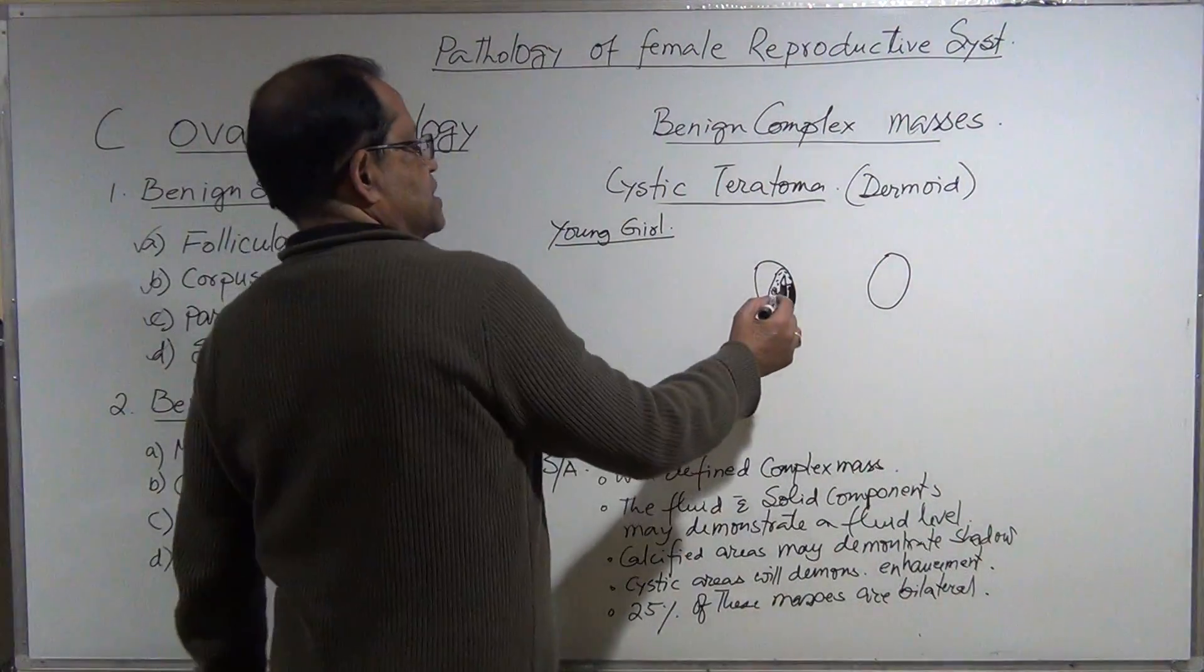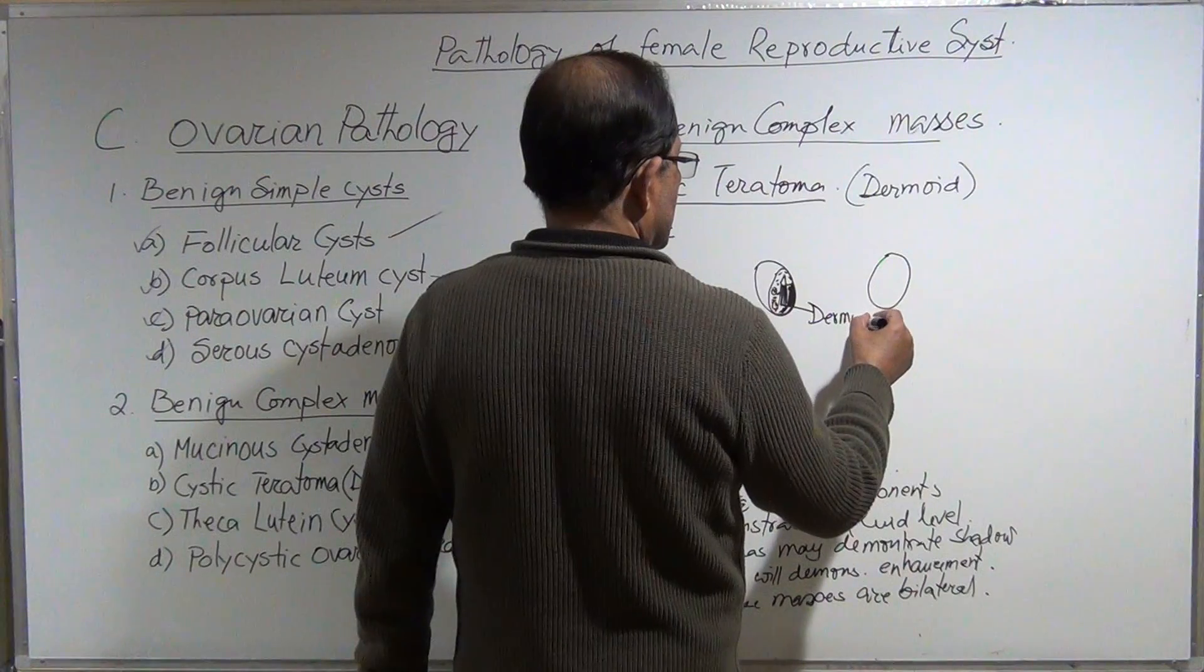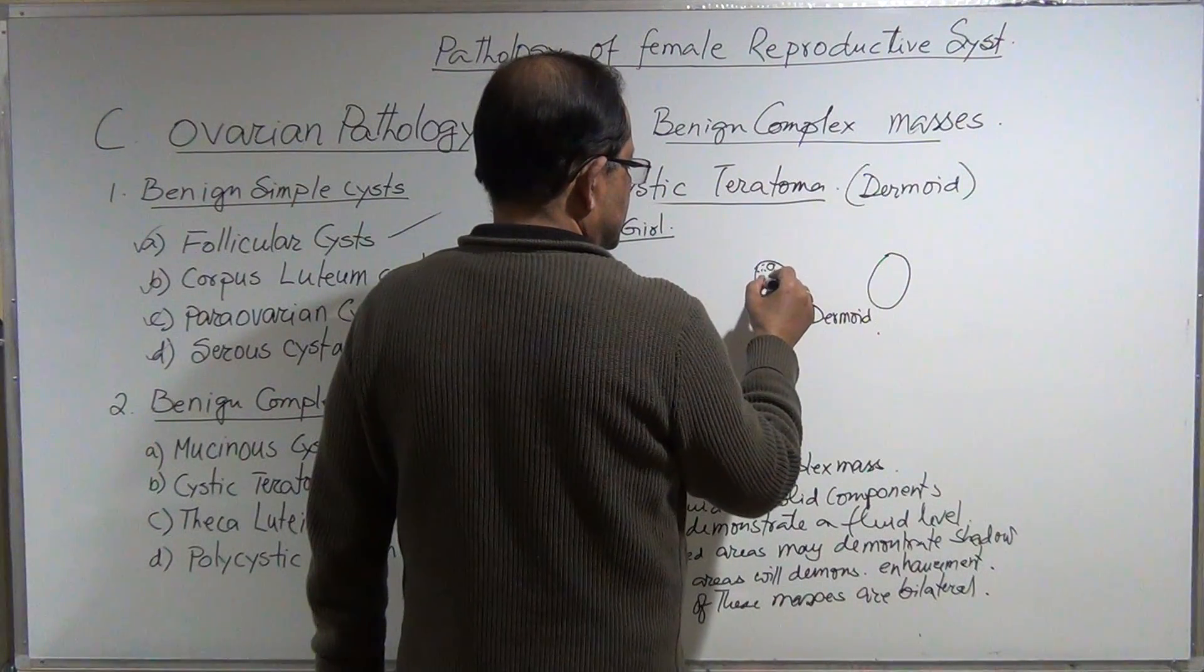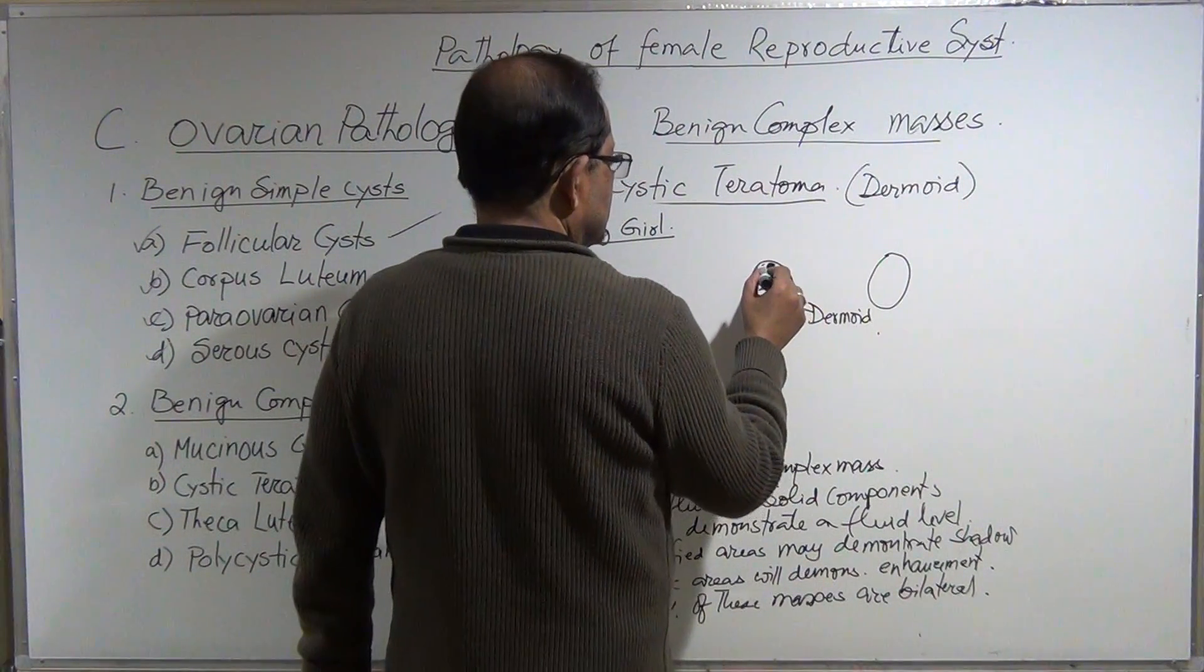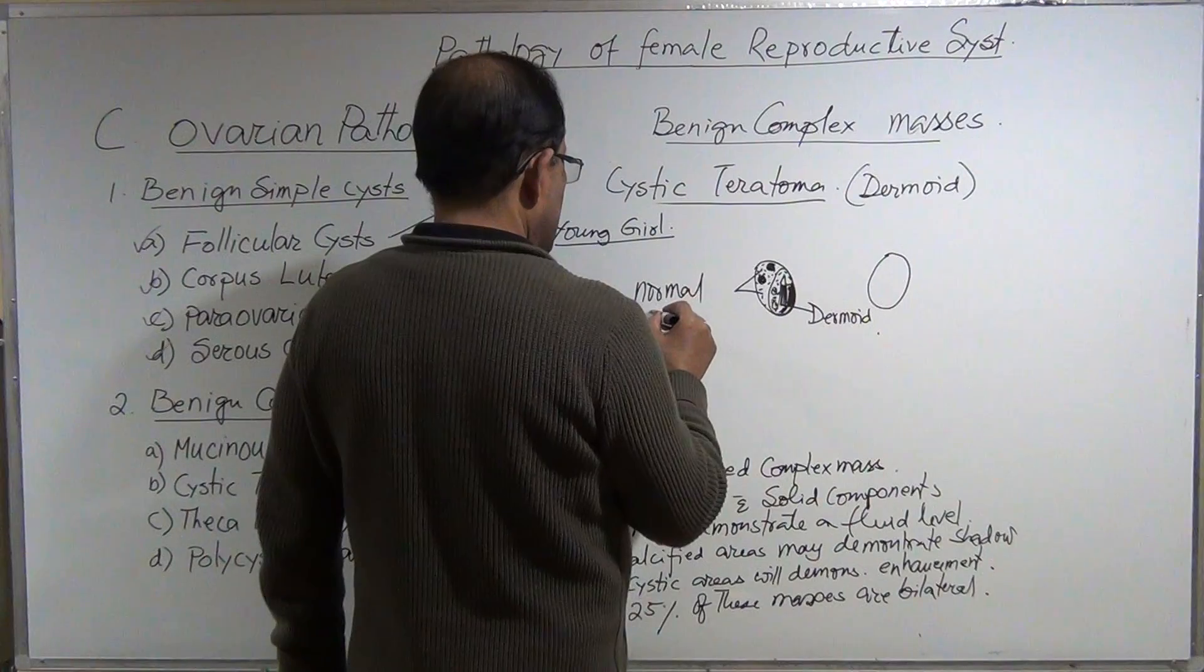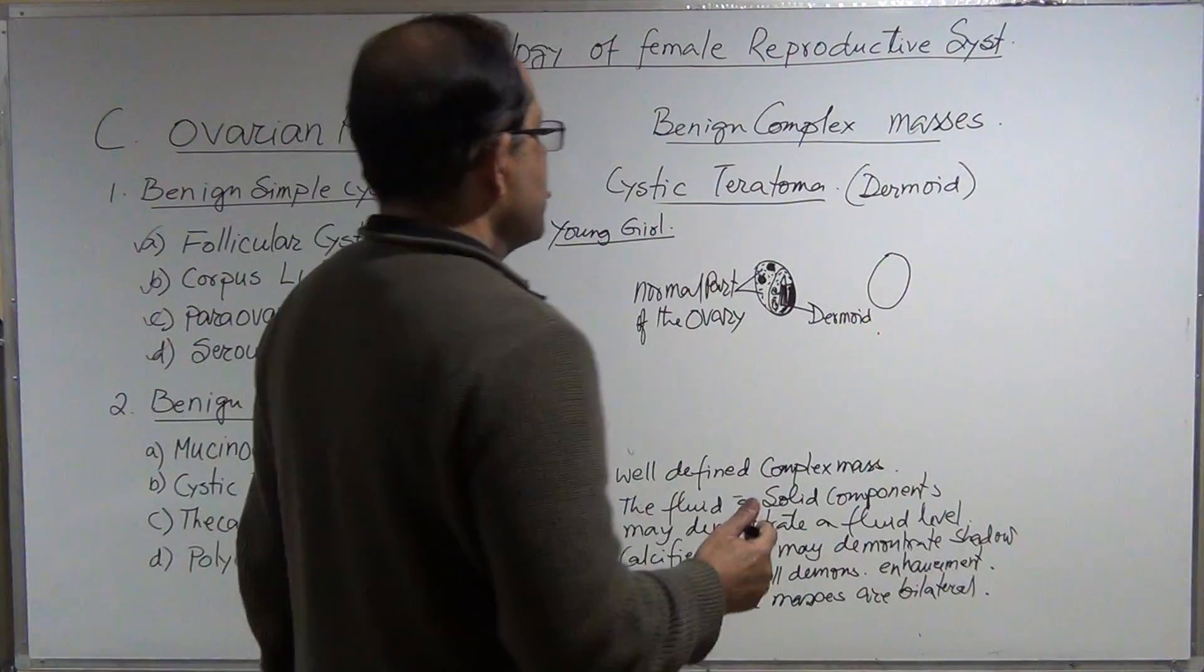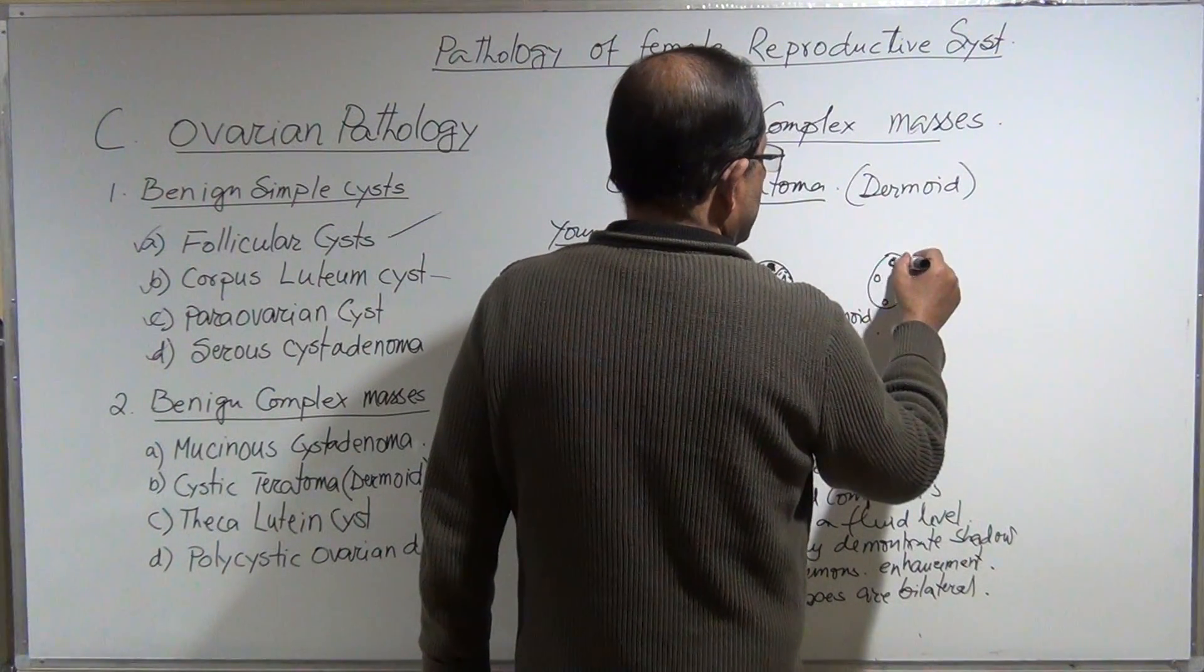So this is dermoid, that is teratoma, and this is normal ovary—the normal part of the ovary. The other ovary is fine.